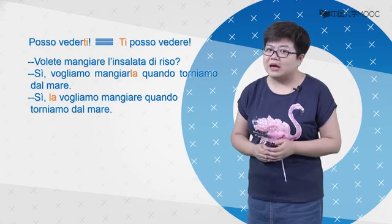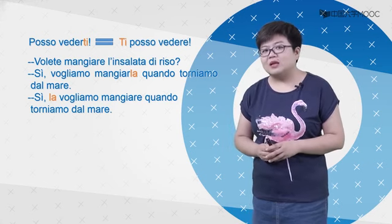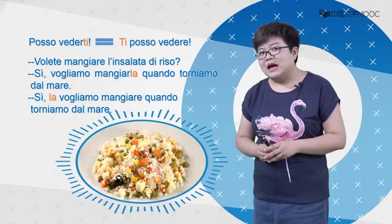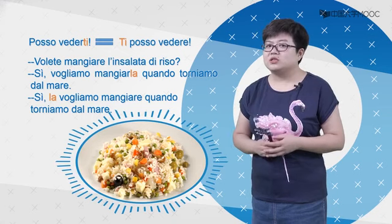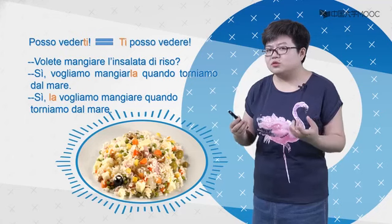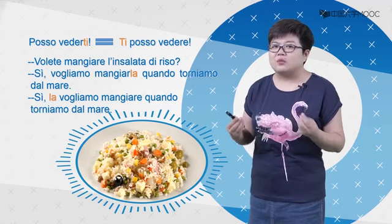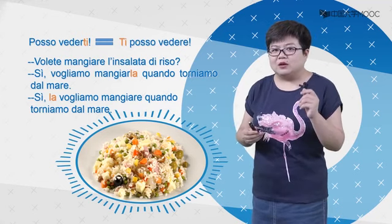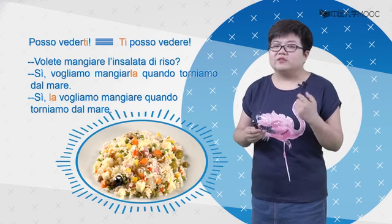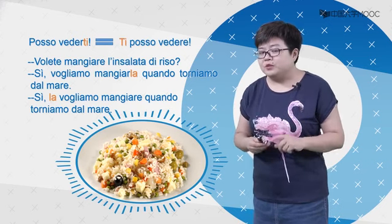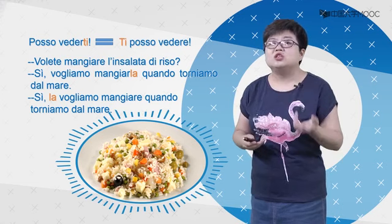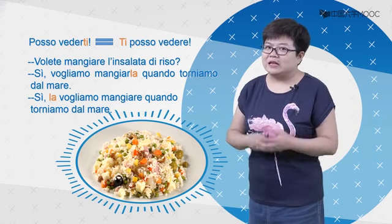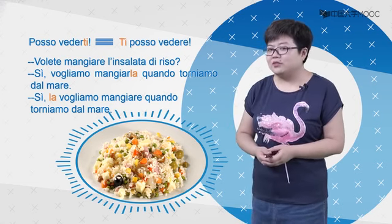同样的，我们可以把代词放到句首：Sì, la vogliamo mangiare, quando torniamo dal mare. L'insalata di riso就是米饭沙拉，意大利人夏天的时候经常吃的。这是米饭里头有很多的sottaceti，就跟咱们中国的泡菜、腌菜有点相似，然后里面会放橄榄、会放金枪鱼，那么酸酸的，很清爽，夏天大家很喜欢吃这个insalata di riso。